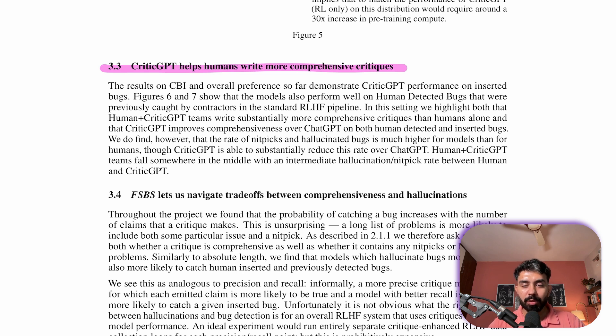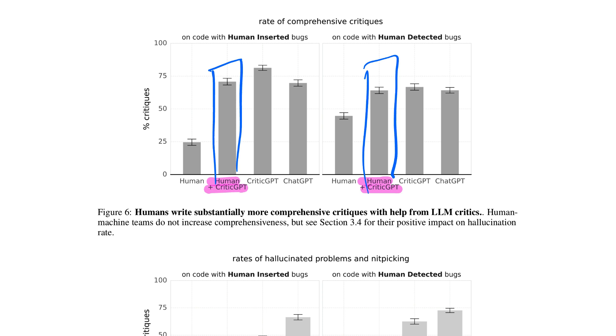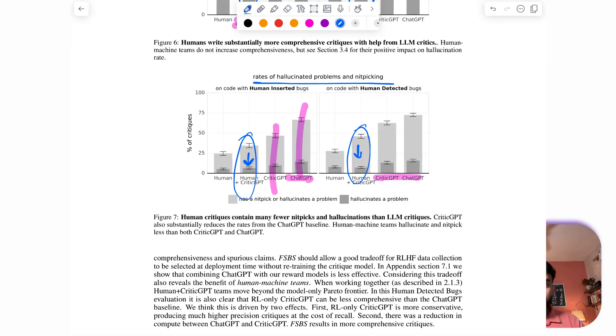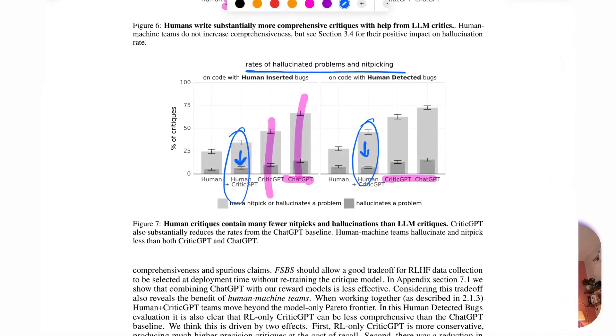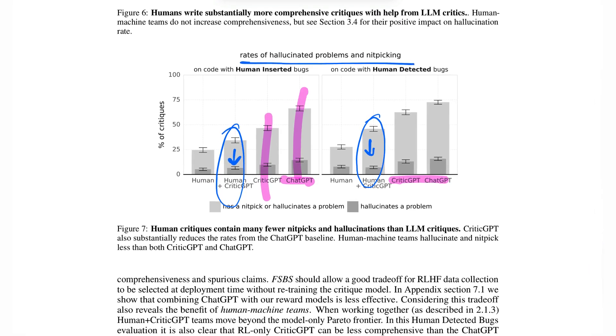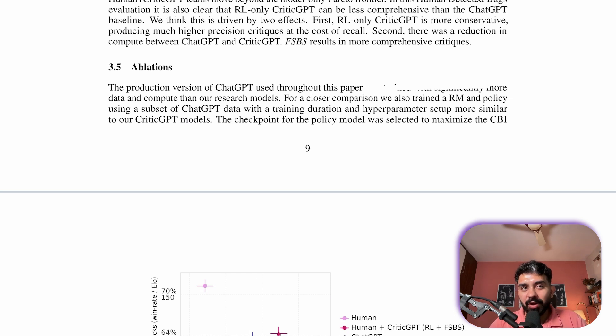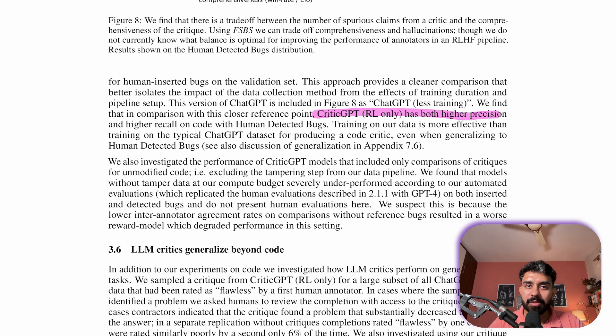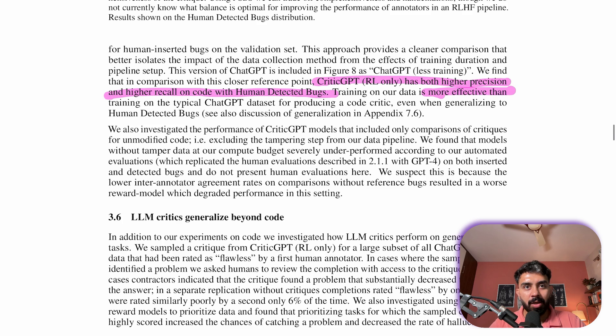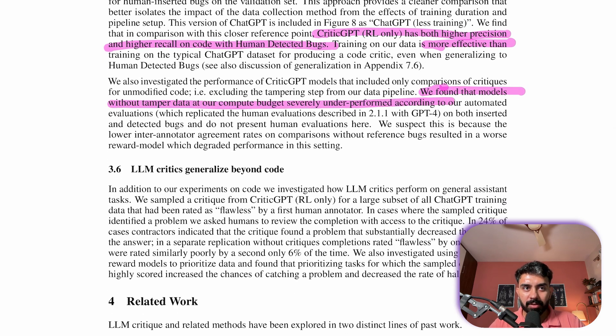CriticGPT helps humans create more comprehensive critiques, especially in human plus CriticGPT teams. It outperforms the ChatGPT on both human detected and inserted bugs. While models have higher rates of nitpicks and hallucinations, the human plus CriticGPT combination, these teams when they work together, they strike a balance. While ChatGPT was trained with more data and compute, CriticGPT was tested with a similar setup for a fair comparison, and CriticGPT showed higher precision and recall on human detected bugs, proving more effective for code critique.